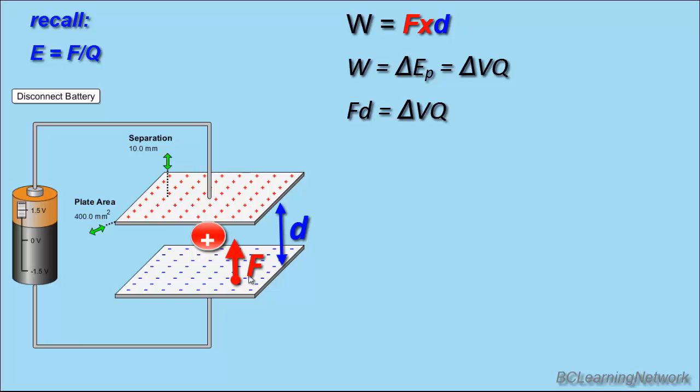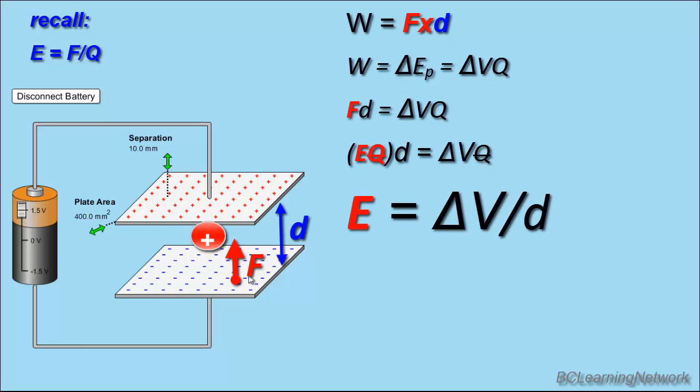We know that the force stays constant between parallel plates because the field lines are constant. And, if you'll recall, the electric field is given by force over Q, so force is actually E times Q. So, if I substitute that into our equation, I get E times Q times D is equal to change in voltage times Q. The Q's cancel, and I end up getting, with a little bit of manipulation, the electric field between parallel plates is given by my change in voltage across the plates divided by the separation D. Remember, D was the distance we had to move that charge, which was the plate separation. So, electric field is change in voltage over D for parallel plates.